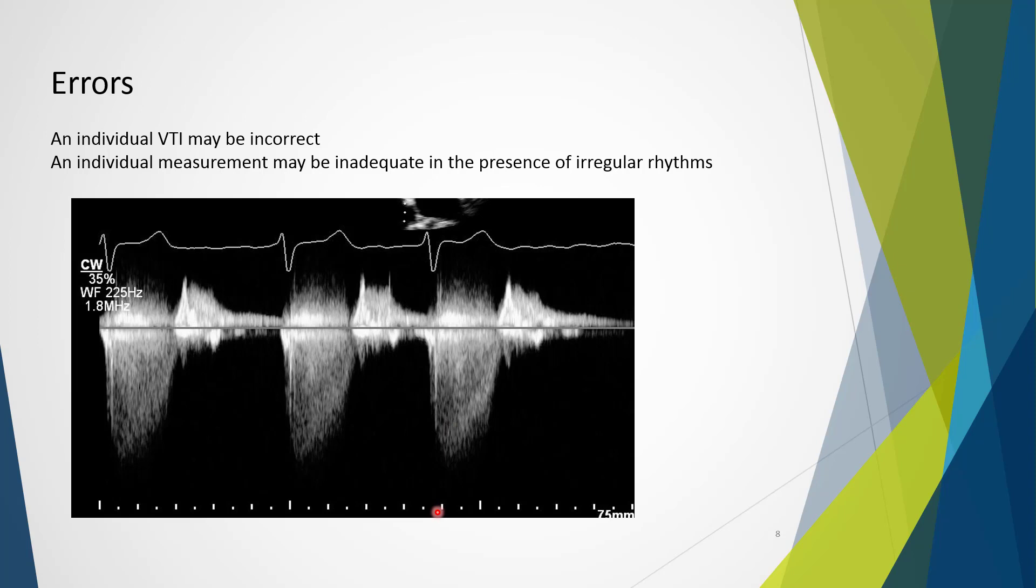Should the patient actually be in atrial fibrillation or have persistent frequent ectopic beats, then an even larger number of samples should be applied, maybe even up to eight. And this would obtain a much more accurate representation of what we need to do.